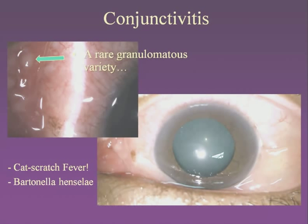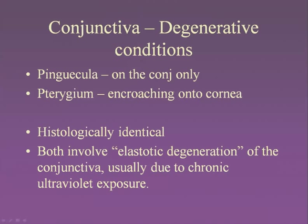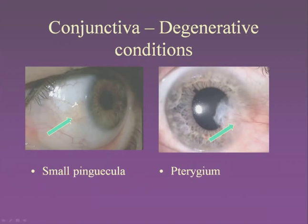Here's another version of conjunctivitis — a rare one. This patient had a cat that was scratching her, and she developed a granulomatous conjunctivitis. Tissue biopsy revealed Bartonella henselae, which is cat scratch fever. There are also common degenerative conditions of the conjunctiva featuring elastotic degeneration. A small yellow spot from sun damage is called a pinguicula — elastotic degeneration from UV exposure. If it spreads onto the cornea in a triangular wing shape with stretched-out blood vessels, that's called a pterygium. There's also MALT lymphoma that can occur in the conjunctiva.